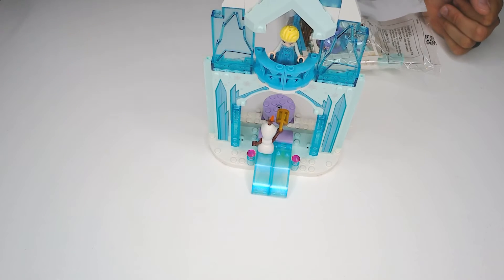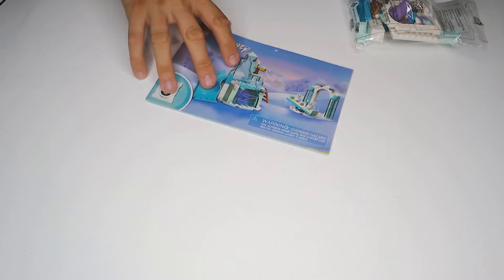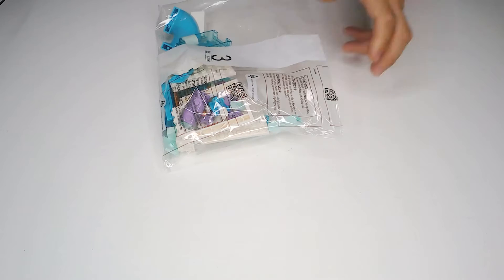We built this big ice castle. Now we're going to get into booklet number three. Looks like it's going to be some kind of scenery element with a slide, a little telescope, a little snowball. Let's sort out bag three and then we'll get into the instructions.